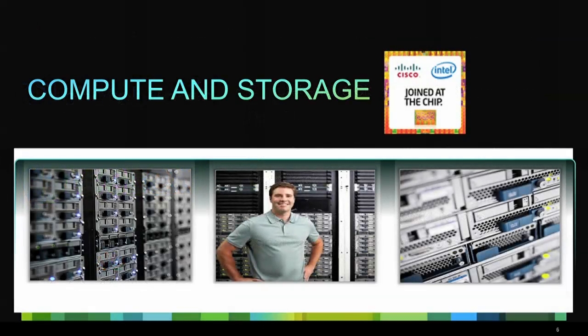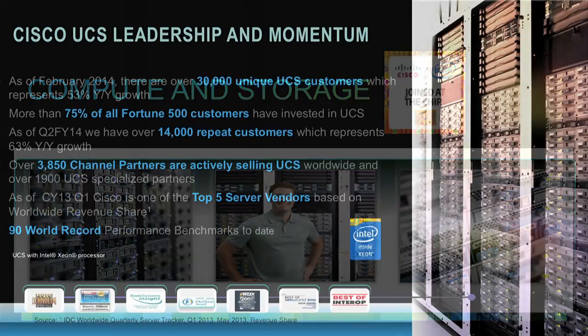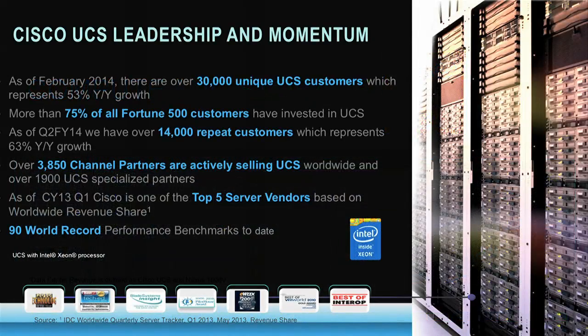Now let's take a deep dive into the UCS — Unified Computing System — product line. UCS has been around for a few years with tremendous traction and double-digit growth. Very large customer base including a very large percentage of the Fortune 500. High-performing product line with both Blade and Rackmount form factors, many performance records, and an excellent fit for OpenStack compute and storage deployments.